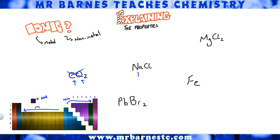NaCl: sodium is found in group 1, chlorine is found in group 7, so I have a metal and a nonmetal — that's ionic. PbBr2: you can see lead here and bromine over on the right, therefore I have ionic bonding.